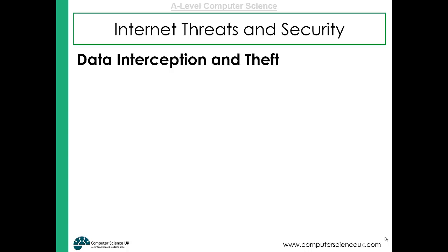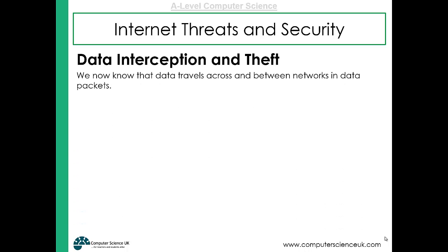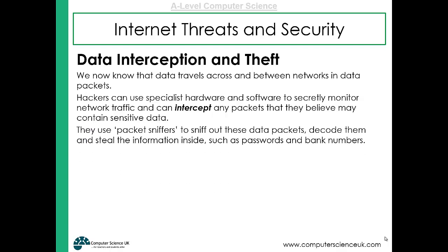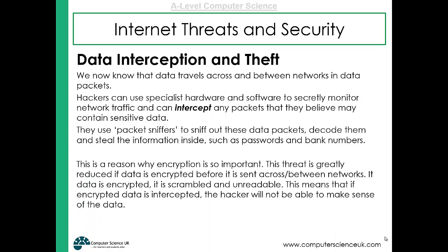Data interception and theft is another threat to a network. We know that data travels across networks in data packets. Hackers can use something to monitor network traffic so they can intercept any packets they believe contain sensitive data — these are called packet sniffers. They sniff out the data packets, decode them, and steal the information inside, such as passwords or bank numbers. This is an example of why encryption is really important: if data is scrambled before it's sent, then even if intercepted it won't be readable.